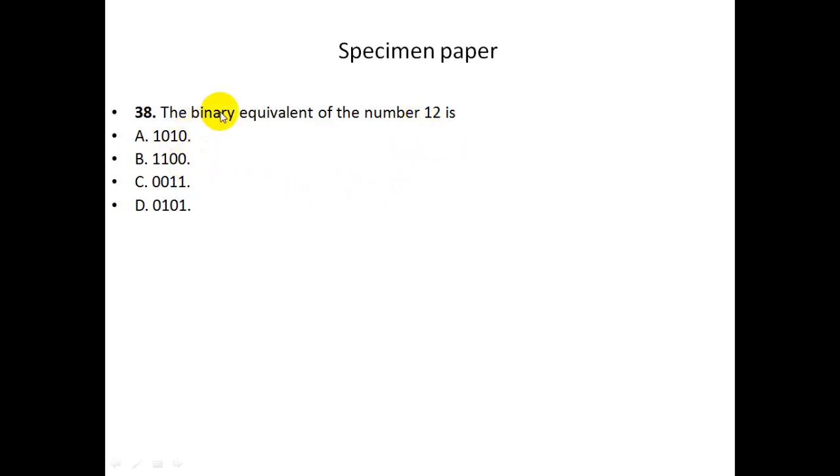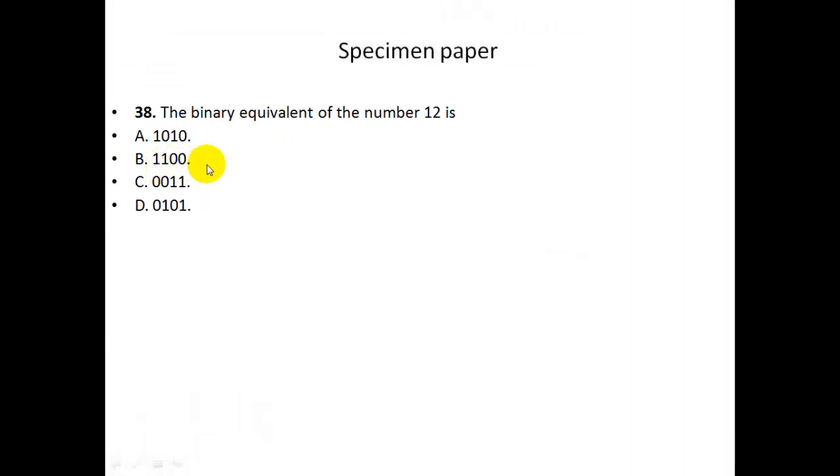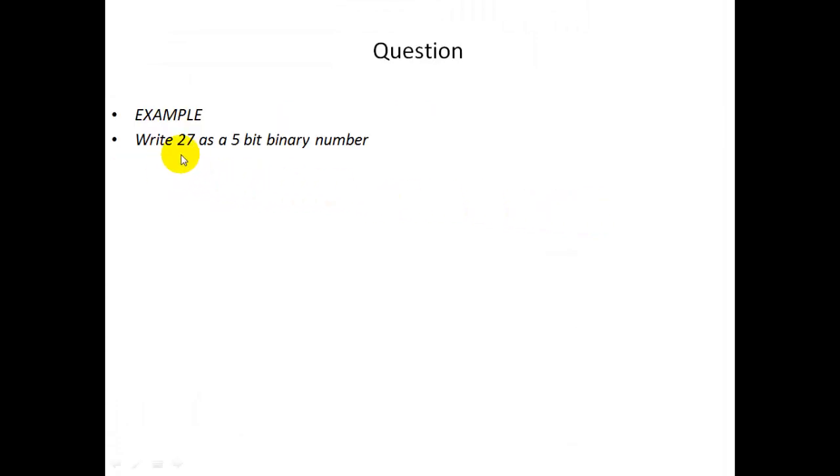Specimen paper. This is an example. The binary equivalent of the number 12 is which one of these? Stop and try to give an answer. There's one 8 and one 4. So that's 8 plus 4 is 12 plus 0 plus 0. So it's B. And you have to work 27 as a 5-bit binary number.